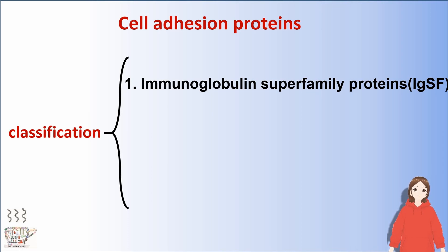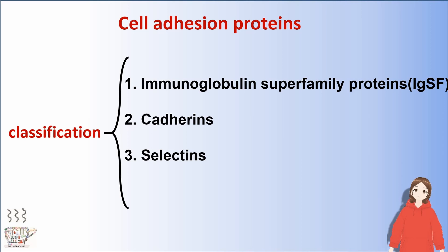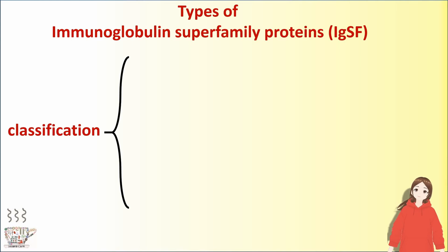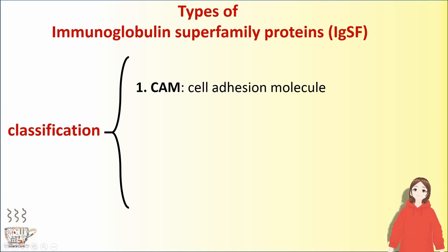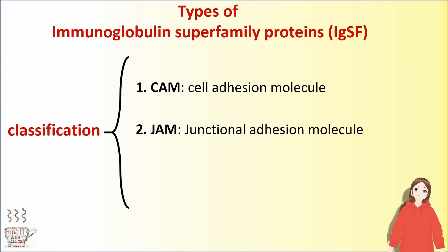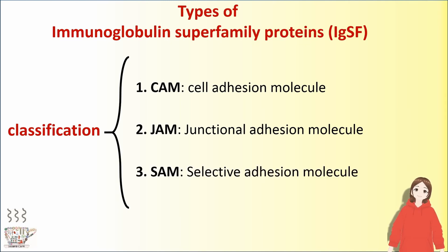The first subgroup is the immunoglobulin superfamily proteins, or IGSF. Immunoglobulin superfamily proteins can be divided into three subgroups: CAM (cell adhesion molecule), JAM (junctional adhesion molecule), and SAM (selective adhesion molecule).